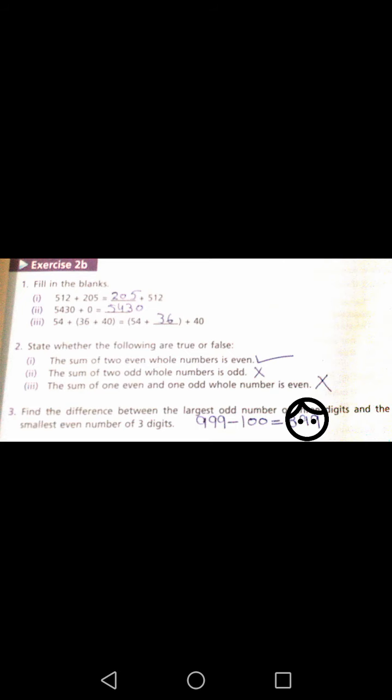Find the difference between the largest odd number of 3 digits and the smallest even number of 3 digits. Okay, largest odd number, you have 3 digits is 999. 999 minus 100 which is equal to 899.